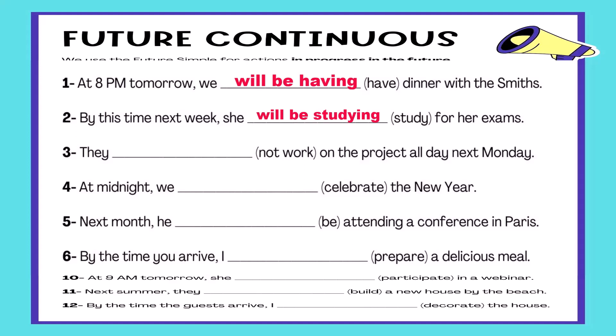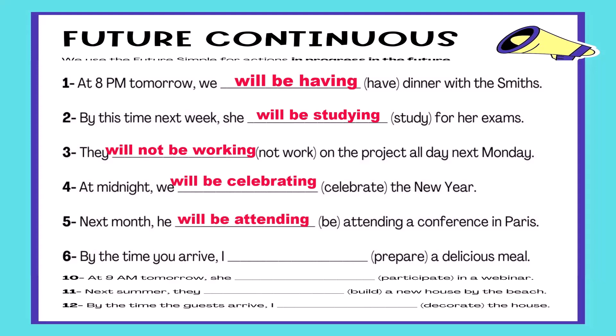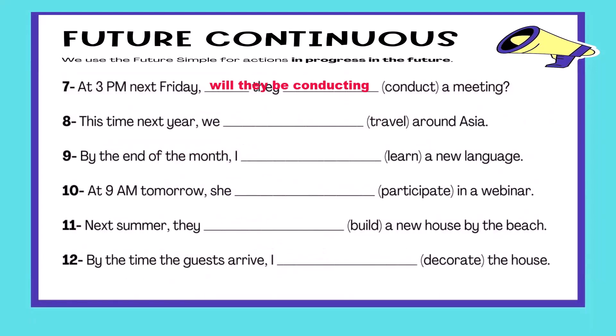Number two: By this time next week, she will be studying for her exams. Number three: They will not be working on the project all day next Monday. Number four: At midnight, he will be attending a conference in Paris. Number five: Next month, he will be attending a conference in Paris. Number six: By the time you arrive, I will have been preparing a delicious meal. Number seven: At 3pm next Friday, will they be conducting a meeting?